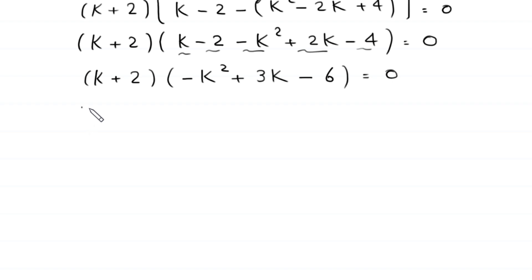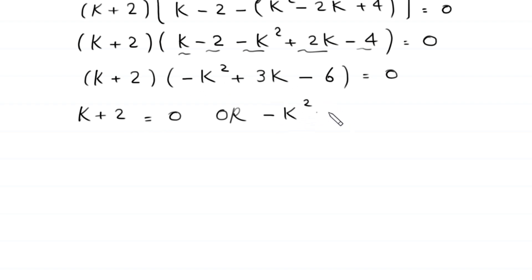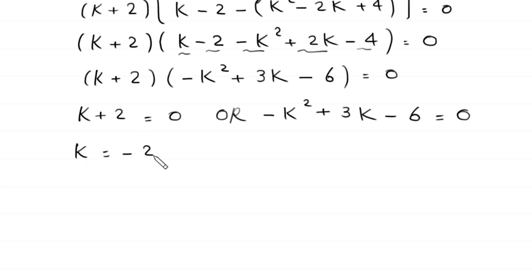From here, either the expression k plus 2 is equal to zero, or the expression negative k squared plus 3 times k minus 6 is equal to zero. From the first equation we get the value of k is equal to negative 2. This is the first value of k, the first solution of this equation.